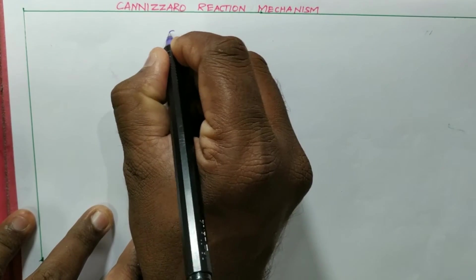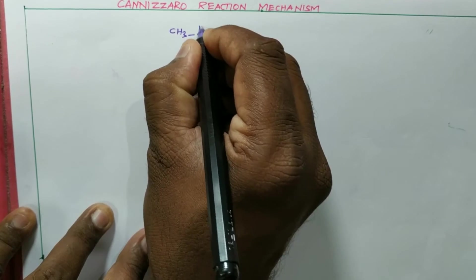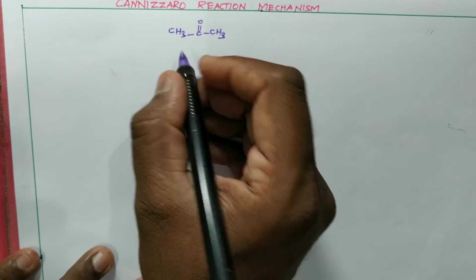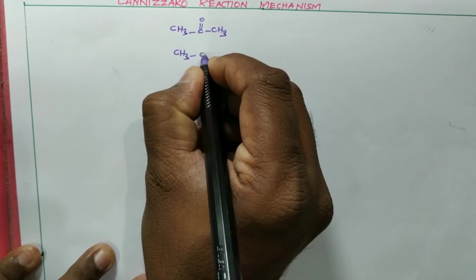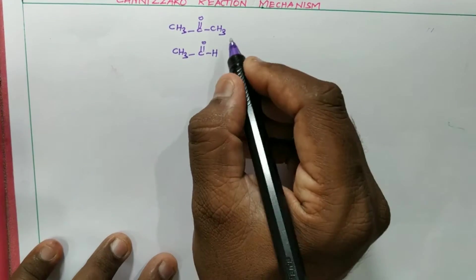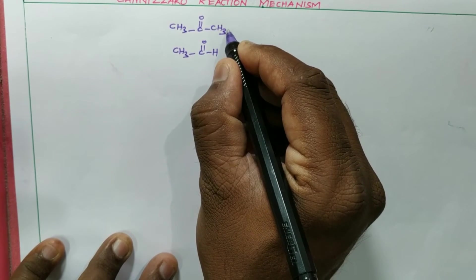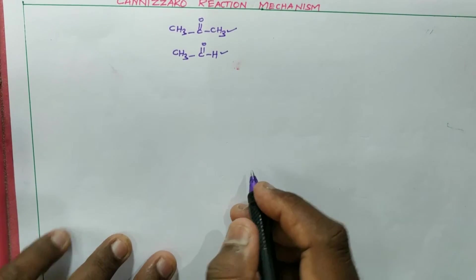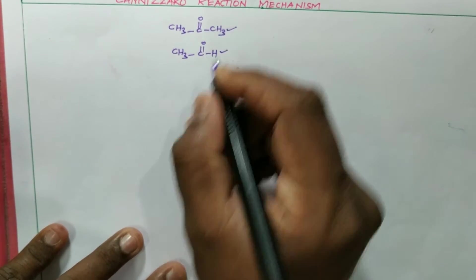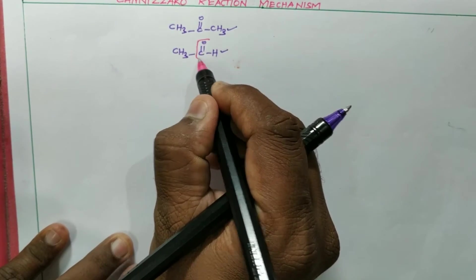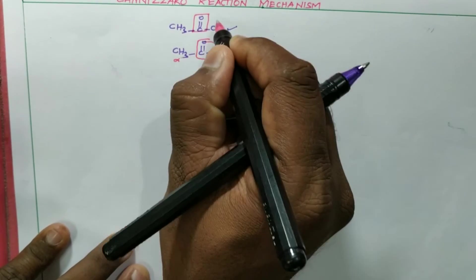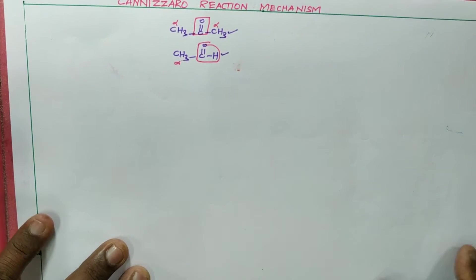Usually, if I take a ketone like CH₃-C(=O)-CH₃ and an aldehyde like CH₃-C(=O)-H, these two — that is, the ketone as well as the aldehyde — do not involve in the Cannizzaro Reaction. Why? Because both are having alpha hydrogen. This is the functional group; this is the alpha carbon with hydrogen. So there are two alpha carbons and six alpha hydrogens.